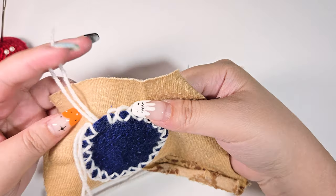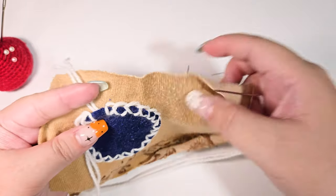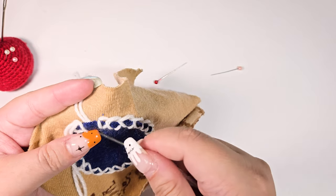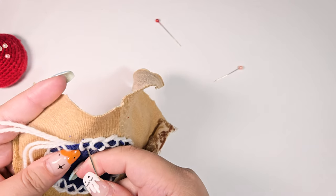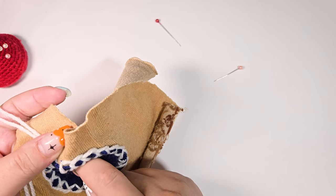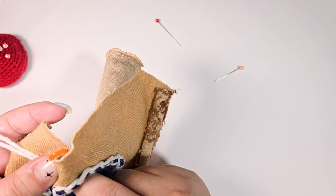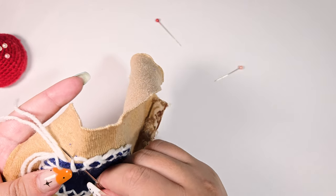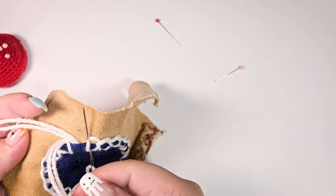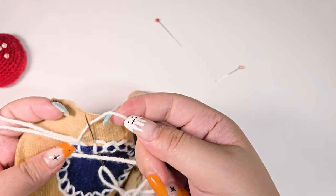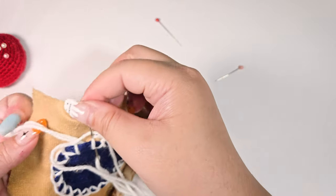Once we are back at the beginning, insert the needle on that same bottom and top stitch that we did in the beginning. So inserting the needle on the first bottom stitch, exiting upwards to the top, loop one of the threads as per usual, pull.